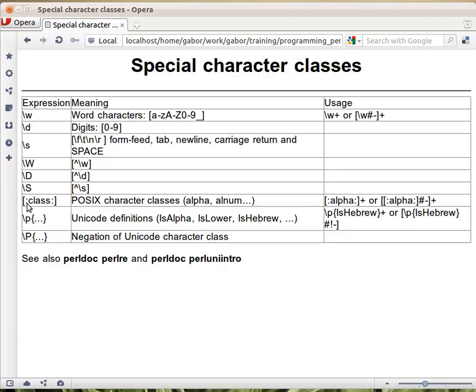The way you use that is you put in square brackets, you put a colon, then the name of the class and another colon and a closing bracket. So the name of the class would be alpha or alnum. So you can use them this way as you can see, either standalone or inside a larger character class.